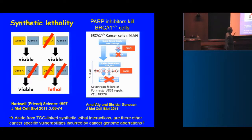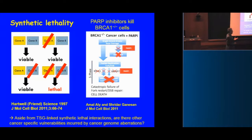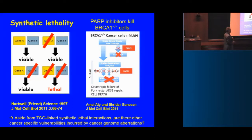The concept of synthetic lethality involves two pathways or genetic elements converging on a biological process, where extinction of either one is viable, but extinction of both leads to a cell-lethal situation. The poster child for this is BRCA and PARP, where the two pathways converge on DNA homeostasis. In a BRCA-deficient cancer, extinction of PARP leads to catastrophic collapse of replication and rampant genomic instability.